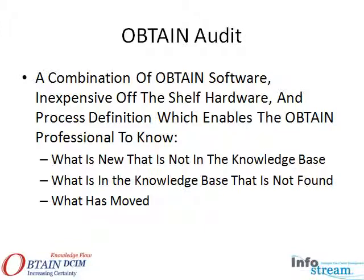From this process, Obtain builds a list of what is new that was not in the knowledge base, what is in the knowledge base that wasn't found, and what has moved and where it has moved to.